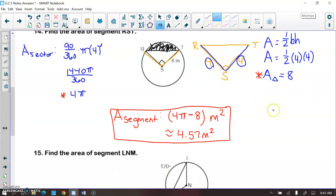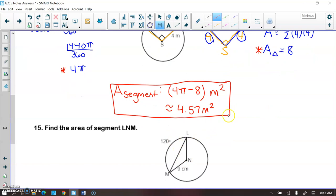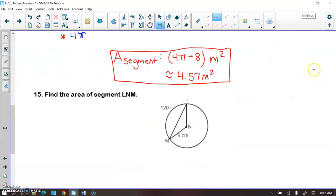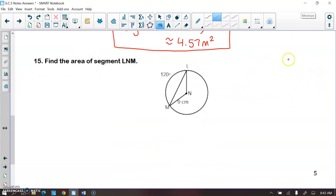Now number 15 is going to be different because we're not dealing with a right triangle. With right triangles it's very easy to find the area, but for number 15 we're going to have to do a little more work. First let's start off with the area of the sector.